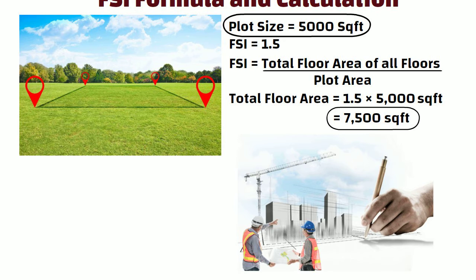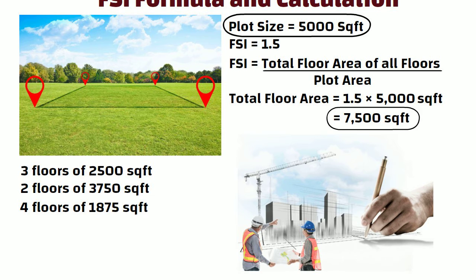In this 7500 square feet, you can construct 3 floors of 2500 square feet, or 2 floors of 3750 square feet, or 4 floors of 1875 square feet.